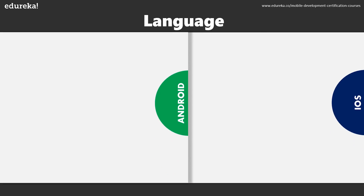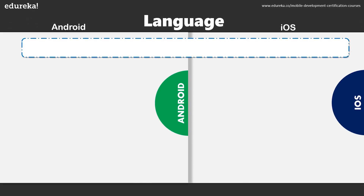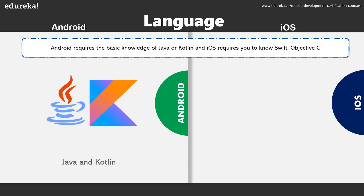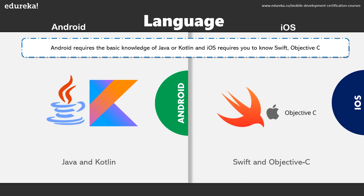Talking about programming languages, Android mainly requires Java and Kotlin, which are actually very easy to learn and understand. Whereas in iOS you need to have basic knowledge of Objective-C or Swift for native development. This is a little tough because Java is an open source programming language and most people know how Java works. Objective-C or Swift is a little tougher when compared to Java.